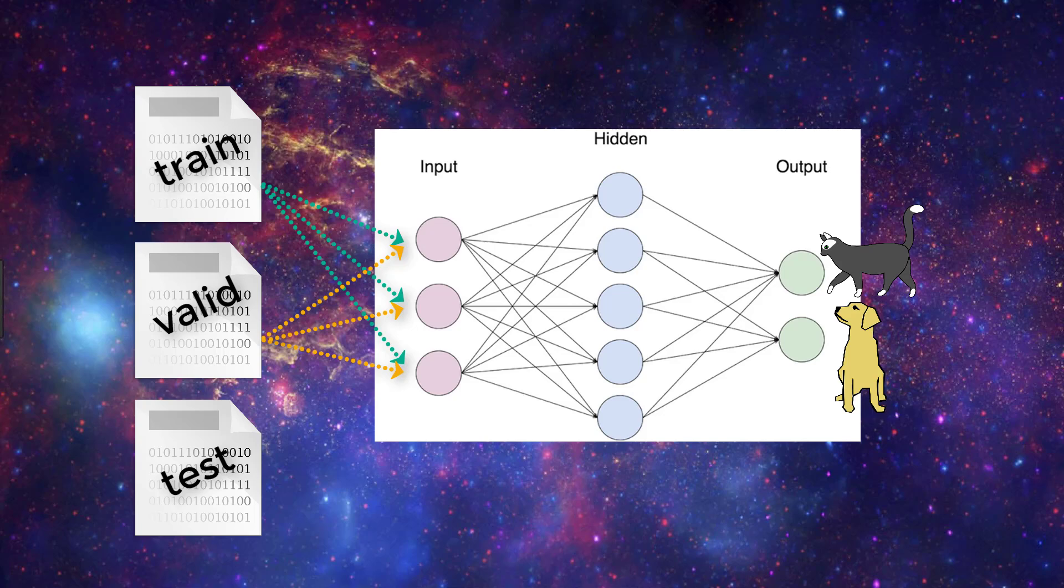After our model has been trained and validated using our training and validation sets, we'll then use our model to predict the output of the data in the test set. Now one major difference between the test set and the other two sets that we've discussed is that the test set should not be labeled. The training set and validation set have to be labeled so that we can see the metrics given during training like the loss and the accuracy from each epoch.